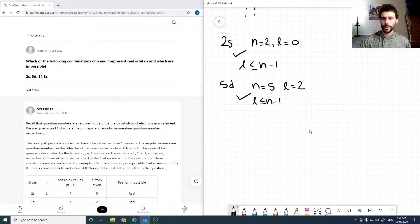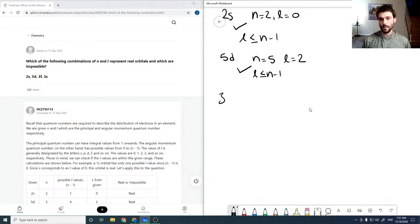So this one, for 3f, n equals 3, l equals 3. So then in this case, this is not good, because l is not less than or equal to n minus 1. Alright, so this one is impossible.